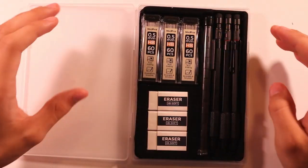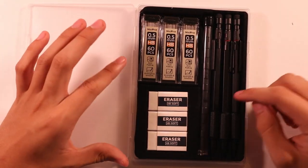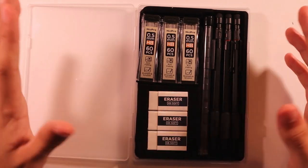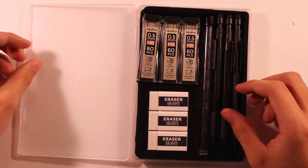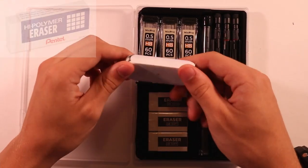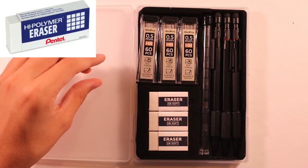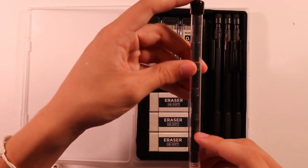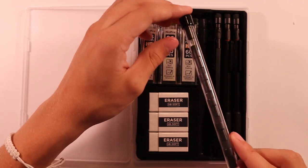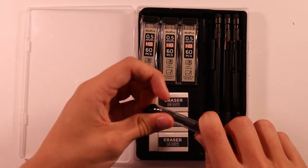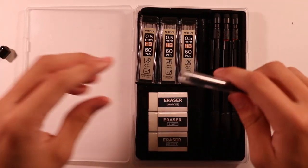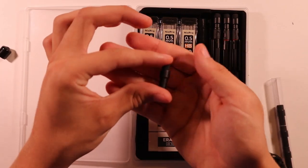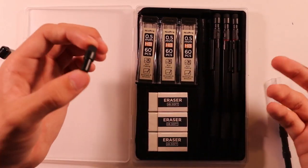It comes with 360 pieces of 0.5 millimeter lead, which is what each of these pencils accepts. It also includes three 4B erasers, which I'm not sure if those are good. I'm not an eraser connoisseur, but normally I just go with my Pentel high polymer, which always works for me and it's pretty good quality. It also comes with replacements for the ones that already come with it, which are pretty small, but we'll talk more about that in the erasability category.